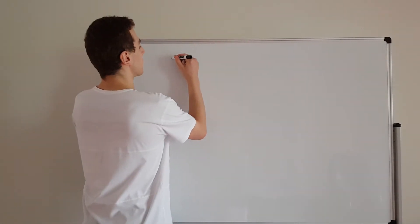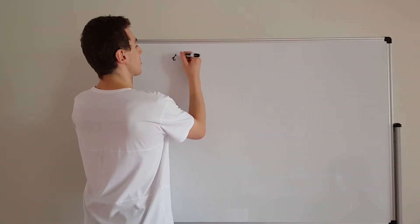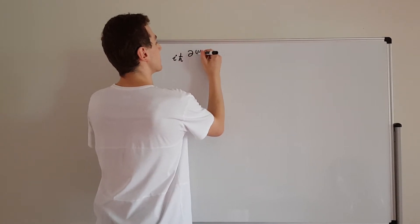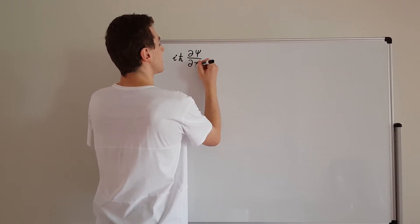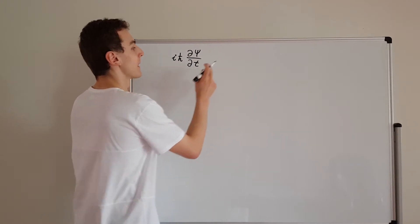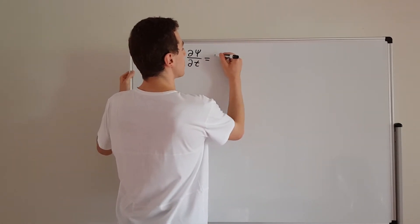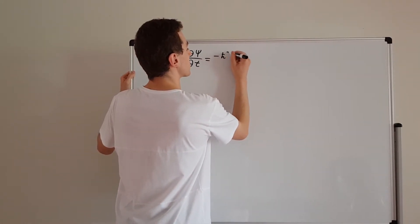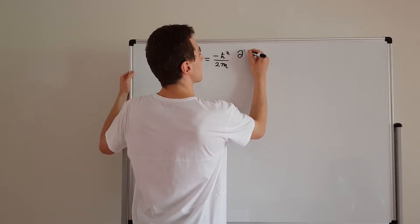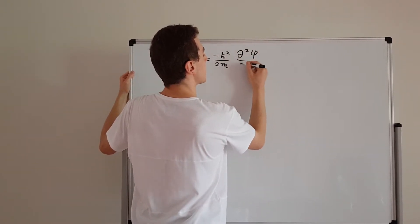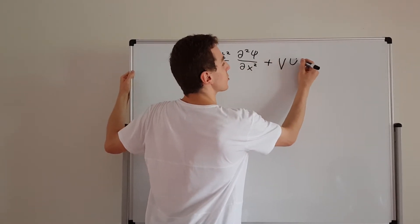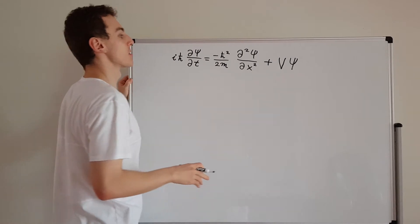First of all, we'll write down the 1D Schrödinger equation. It's going to be i h-bar times d psi dt. This is what we're solving for. This is equal to minus h-bar squared over 2m and then we have the rest of the kinetic energy term, and we add to that the potential term — that's the potential energy function.